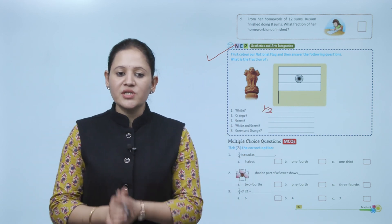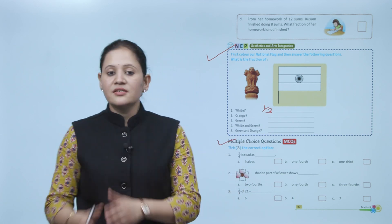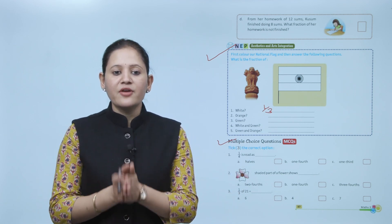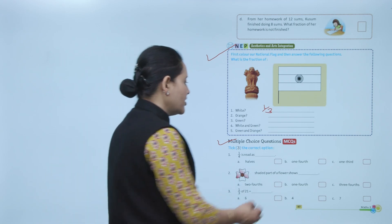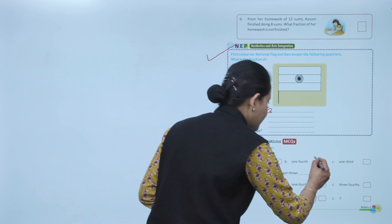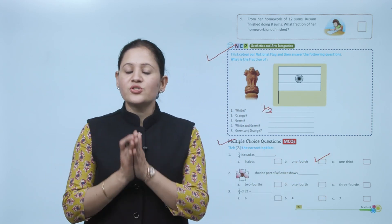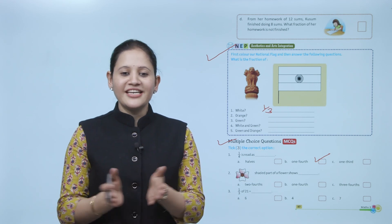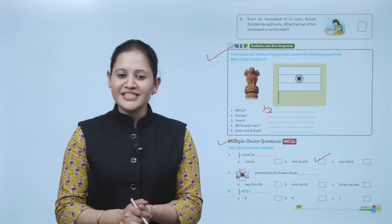Multiple choice question: tick the correct option. 1 by 4 is read as '1 fourth', so B is the correct answer. You have to practice all the questions of this chapter. Here we end the chapter — I hope you understand it well. Now you have to practice it.